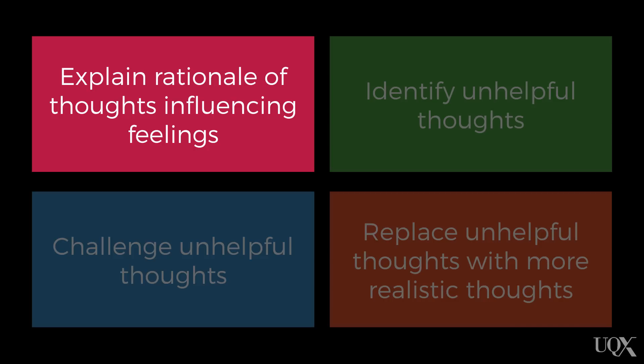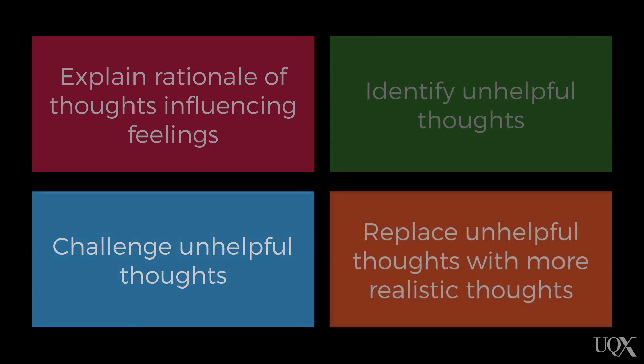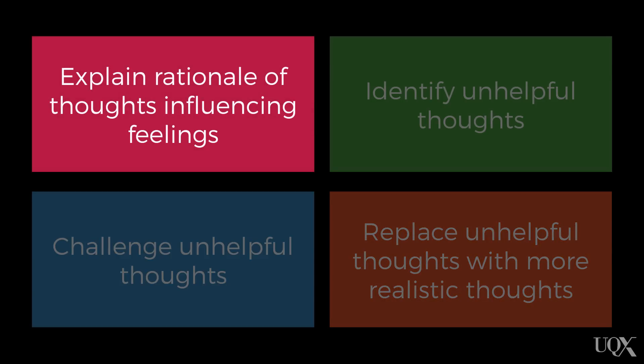The key strategies involved in cognitive behavioural therapy are: explain the rationale for the importance of thoughts and their relationship with feelings and behaviours; identify unhelpful thoughts; challenge unhelpful thoughts; cognitive restructuring; and where appropriate, replace unhelpful thoughts with more realistic thoughts. Of these strategies, the first one — explaining the rationale for the importance of thoughts — is arguably the most important. If the rationale is not done well with clients, they are unlikely to engage in any of the other strategies.